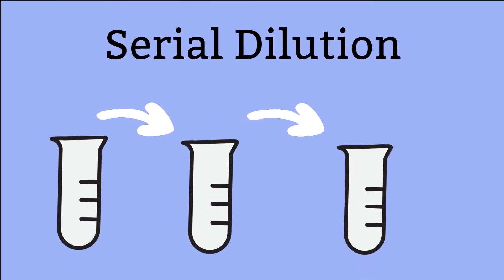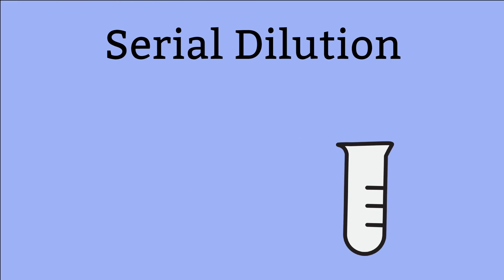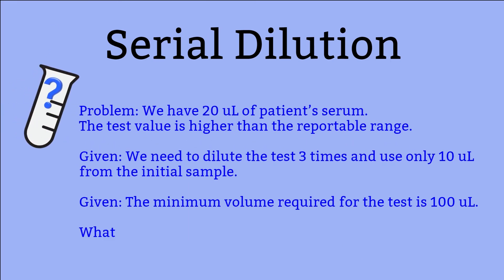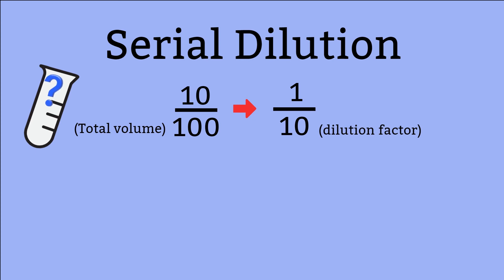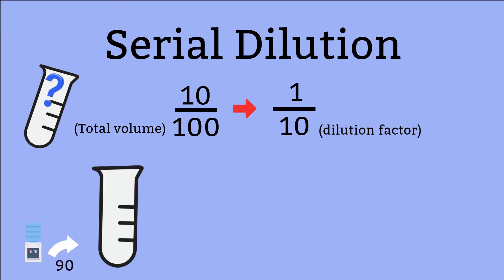Serial dilutions. A serial dilution is simple dilutions performed multiple times. Let's work through an example. We have 20 microliters of patient sample. The test value is higher than the reportable range. We need to dilute the test three times, using only 10 microliters of patient serum, and the minimum volume required for the test is 100 microliters. Since the total volume needed is 100 microliters and you can only use 10 microliters of patient sample, you write 10 over 100, giving you 1 to 10. That means you need 90 microliters of diluent and 10 microliters of patient sample — total volume 100 microliters, concentration 1 to 10.